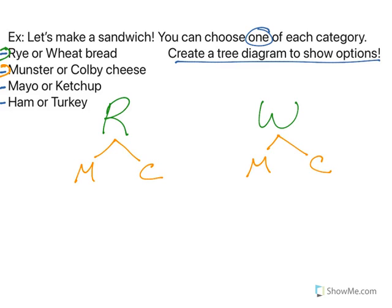Then we go to mayo or ketchup. Now I would be willing to say that mayo and ketchup don't go with everything, but we're going to pretend these are options. So I could have mayo or ketchup, mayo or ketchup, right? Every branch gets either mayo or ketchup because these are our options.